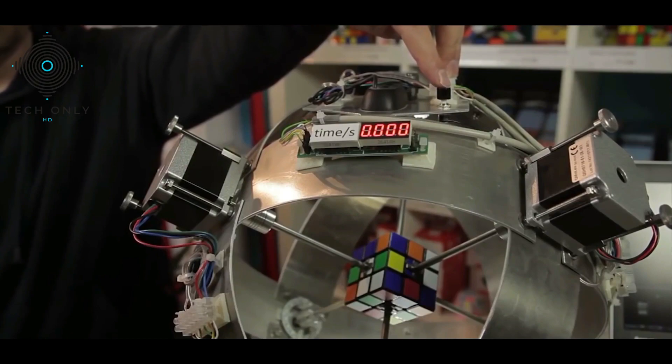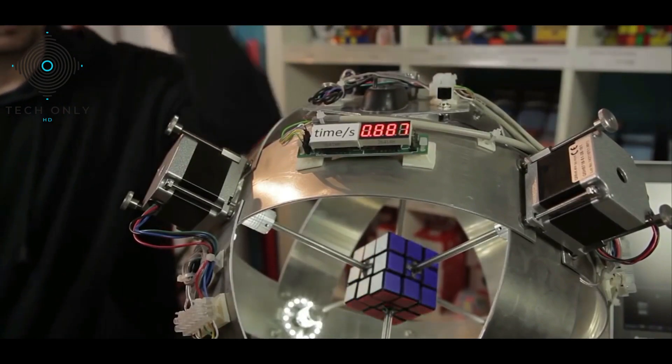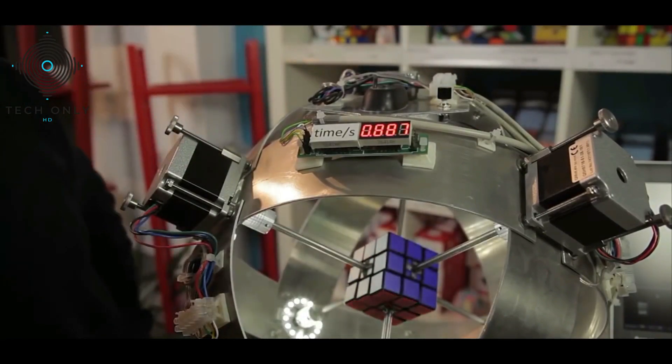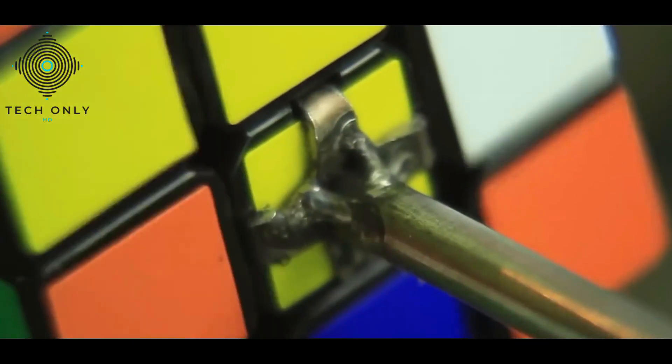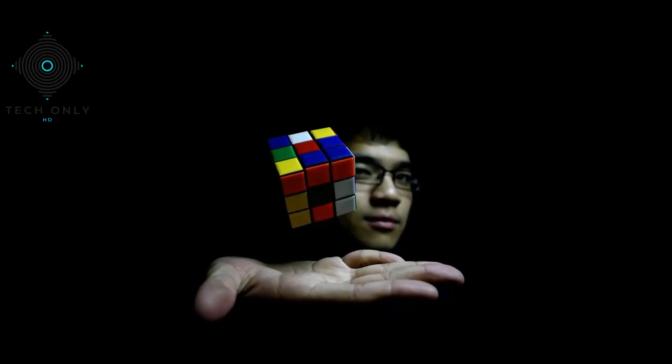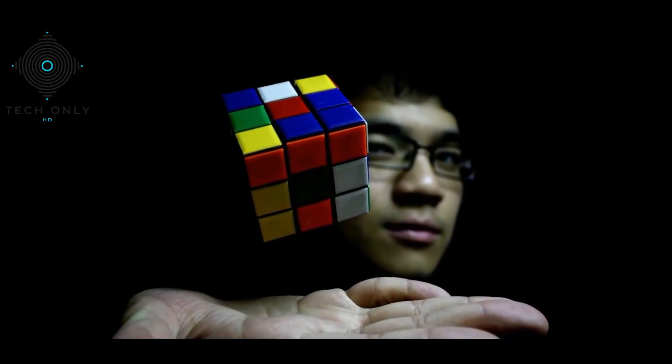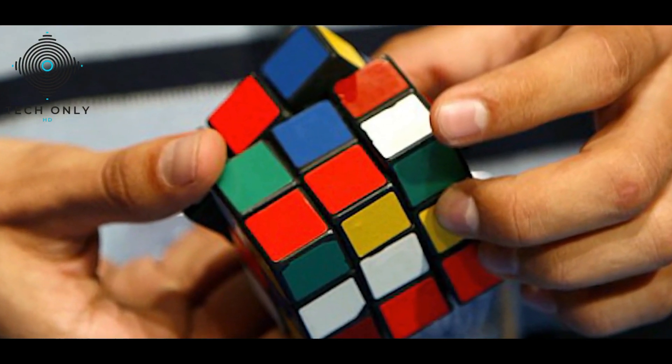Infineon first showcased Sub-1's ability to quickly solve a Rubik's Cube puzzle at the electronica trade fair in Munich. As spectators watched, the robot solved the puzzle in 0.637 seconds, which is a new Guinness World Record. The fastest recorded time for a human solving the puzzle is 4.74 seconds.